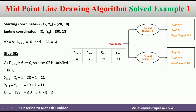Now, d_new becomes d_initial for the next iteration — that is, 2 becomes the d_initial. Since d_initial equals 2, which is again greater than or equal to 0, we select case number 2 again and use those three equations to find the new point and d_new. The new point is calculated by adding 1 to the previous point: 21 plus 1 equals 22, and 11 plus 1 equals 12. So the new point is (22, 12) and d_new is minus 2.